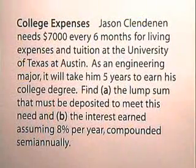Let's look at an exercise in which we find the present value of an annuity. Jason Clenden needs $7,000 every six months for living expenses and tuition at the University of Texas at Austin. As an engineering major, it will take him five years to earn his college degree. Find A, the lump sum that must be deposited to meet this need, and B, the interest earned, assuming 8% per year compounded semi-annually.